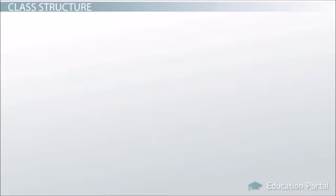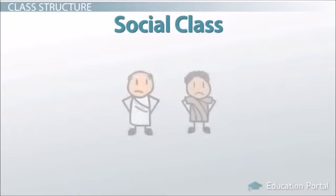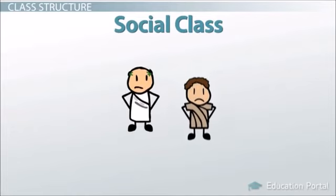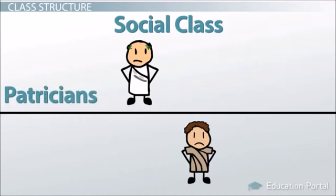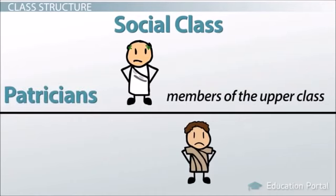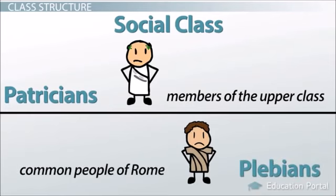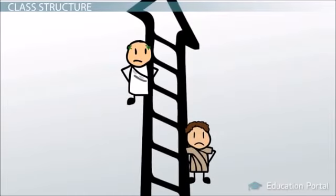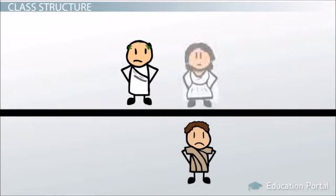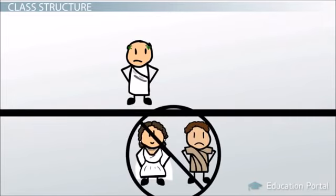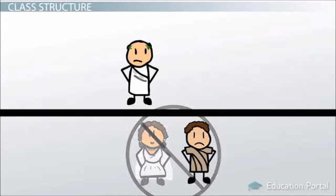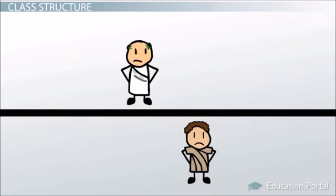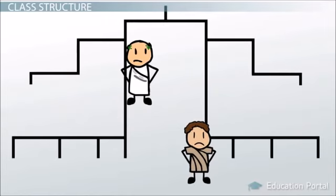To understand the political structure of the Roman Republic, we must first understand the importance of social class. The natural-born inhabitants of the Republic who were not slaves were broken into two main groups: the Patricians, members of the upper class including the nobility and wealthy landowners, and the plebeians, or the common people of Rome. Unlike today's society where people can move up and down the social ladder, the Patricians and plebeians of Rome were completely separate and distinct. Intermarriage between the classes was forbidden. Whether a man was a Patrician or a plebeian dictated what position he could hold within the beginning political structure of the Republic.